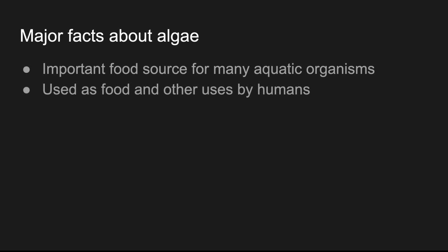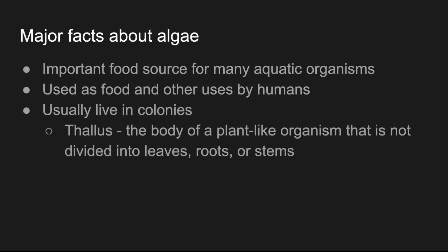Algae are used as food and for other uses by humans — we'll talk about some of those as we get more specific. They also usually live in colonies. Rather than individual algae cells, they usually live in colonies. And when they do, they have what's called a thallus, which is the body of a plant-like organism that is not divided into leaves, roots, or stems. That's a characteristic of plants, but a colony of algae would not have that.